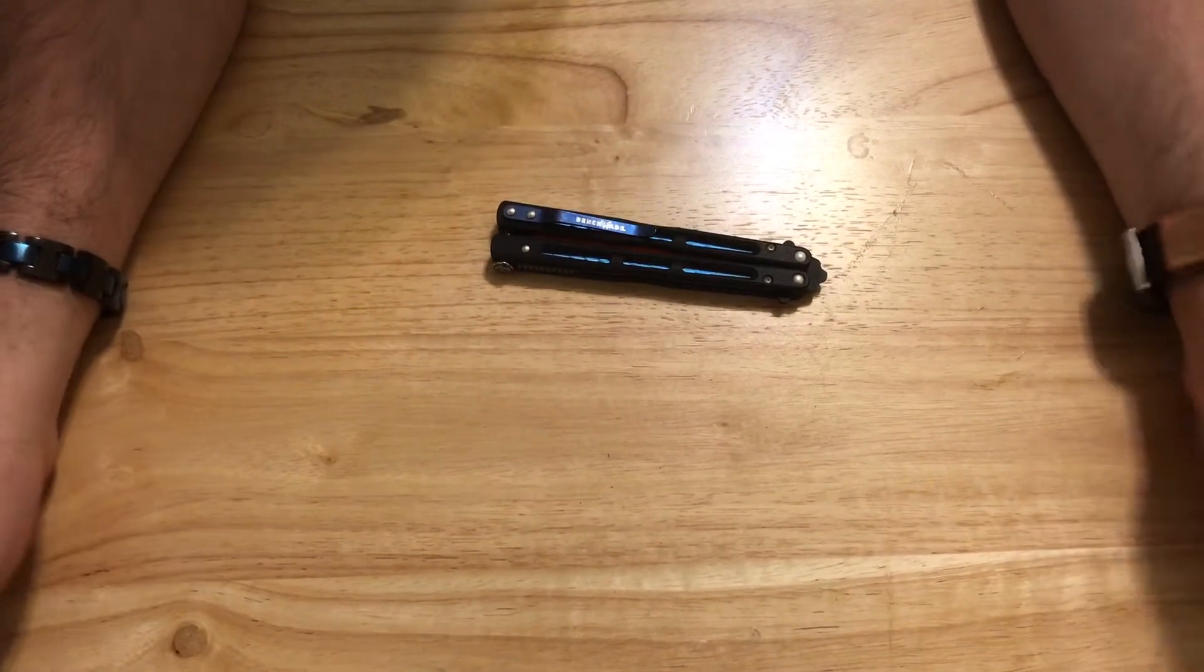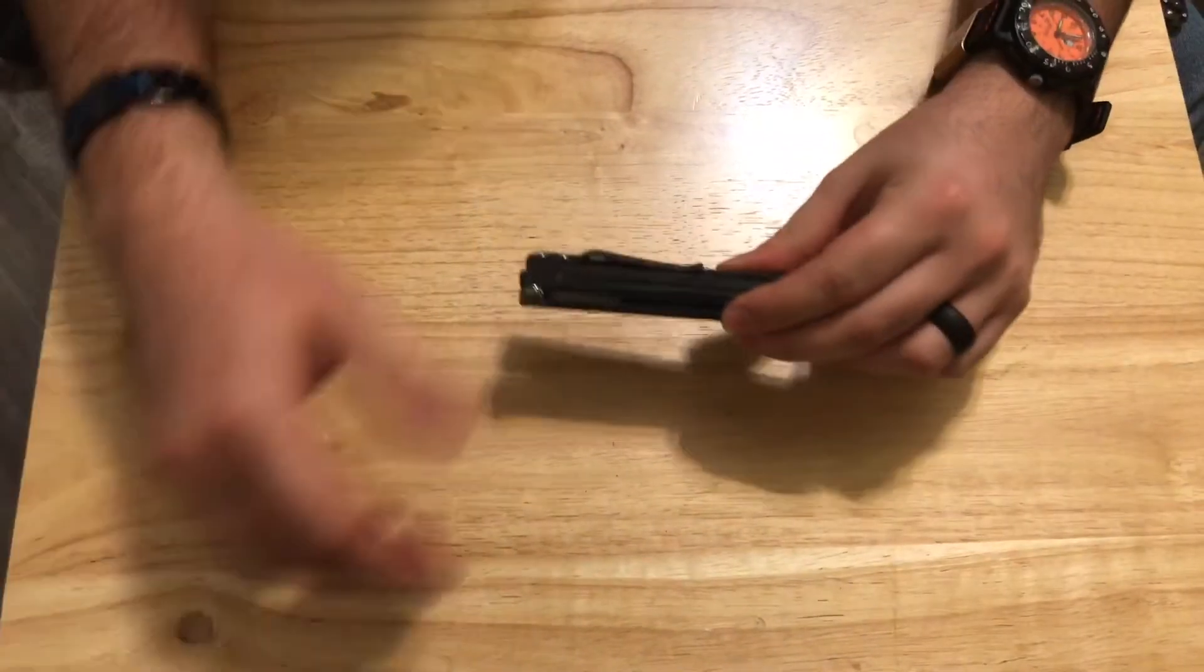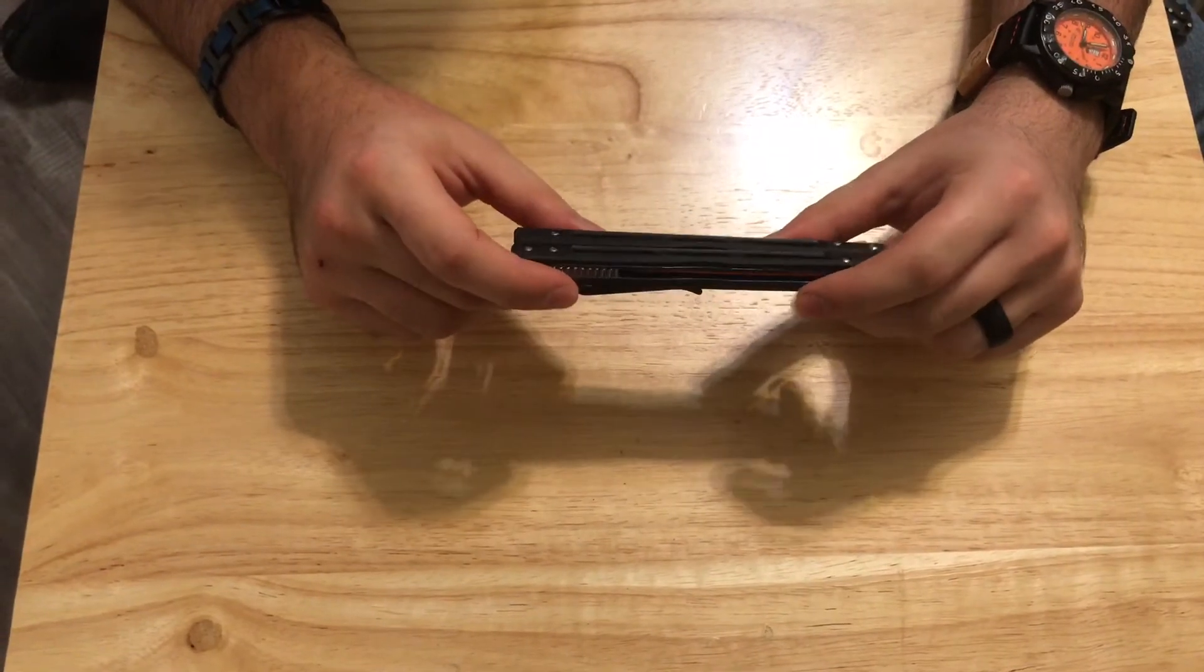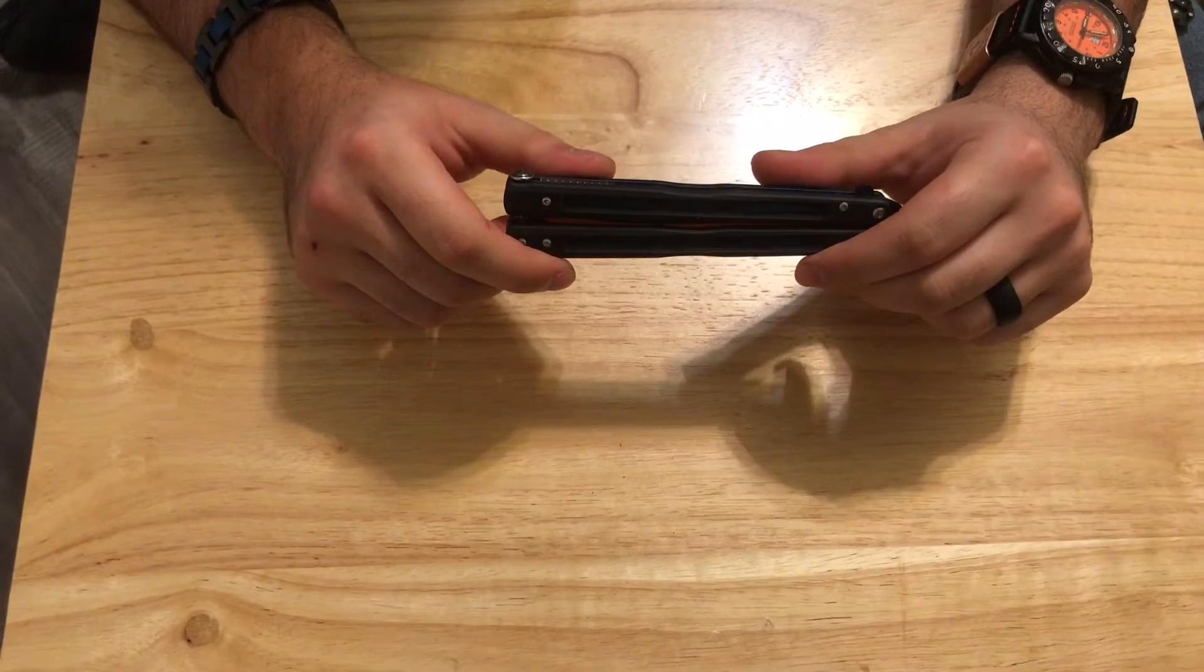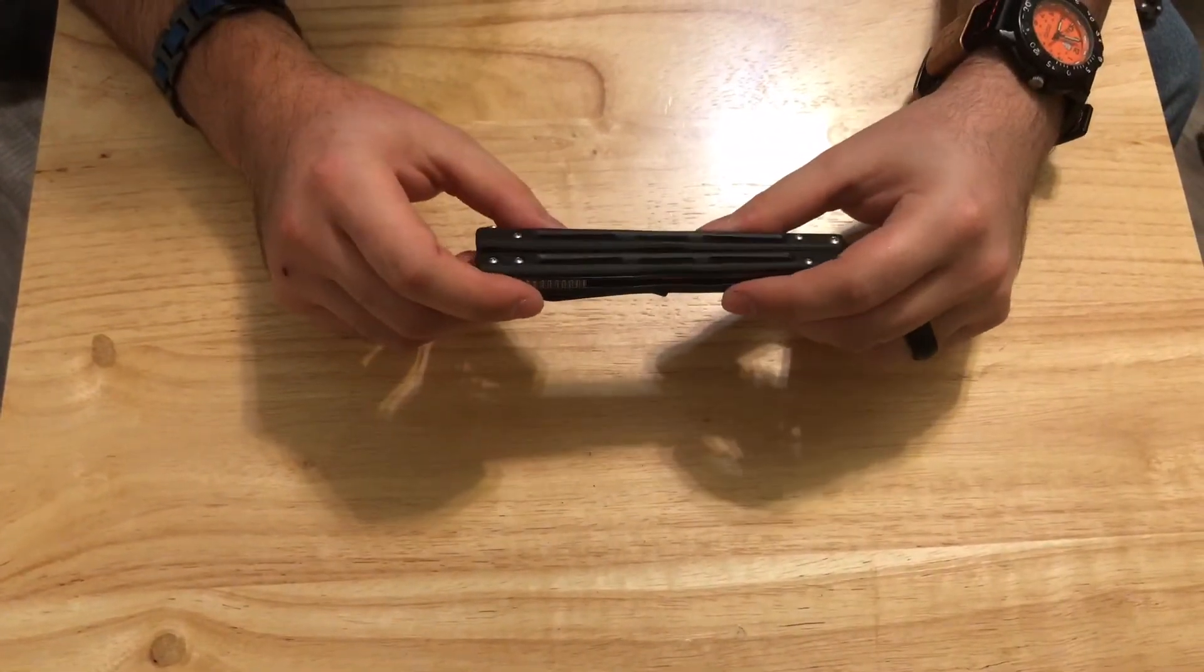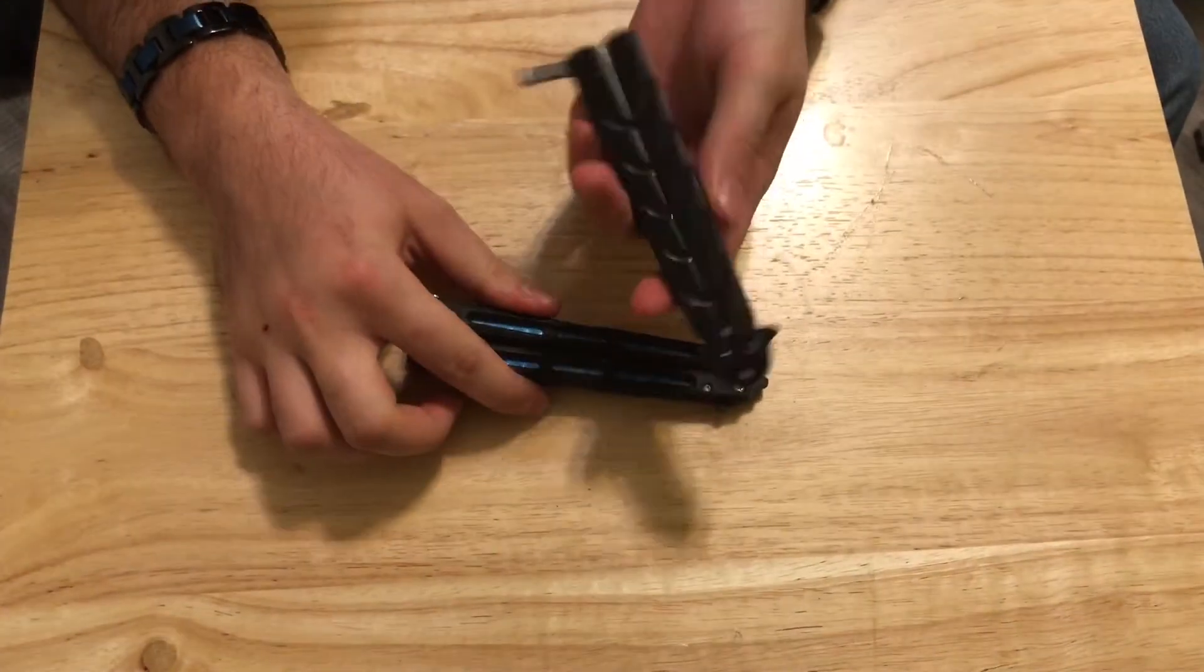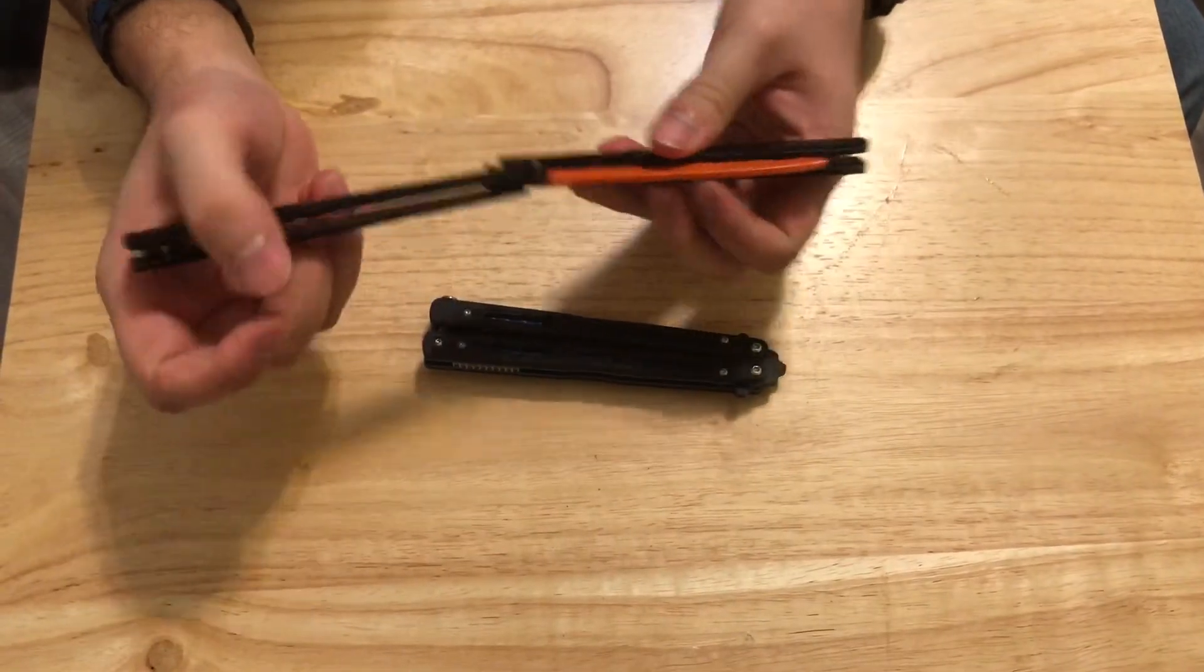Benchmade 51 overview, more like a four-day test review. Just my first impressions without going too in-depth. This is my first balisong other than a knockoff little trainer that cost me 12 bucks. Tape is there just for aesthetic purposes.